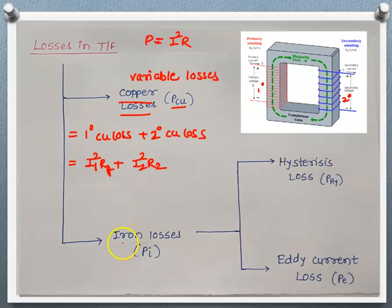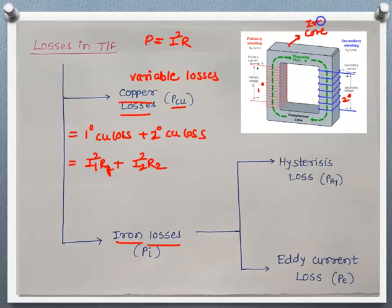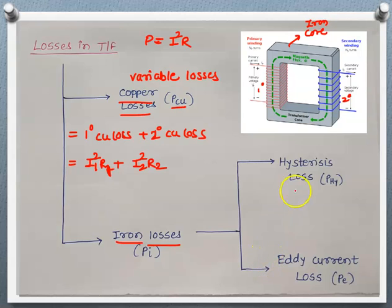The second type of loss is iron loss. This is the power loss which takes place in the iron core material, denoted by P_I. It is made up of two components: one is called hysteresis loss and the second is called eddy current loss.